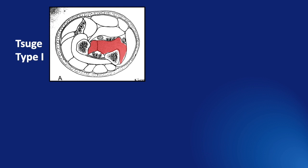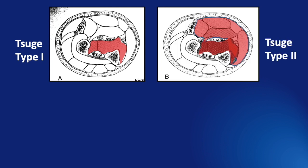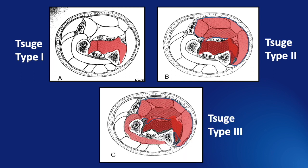In type 1, it is the deep flexors alone that are involved. In type 2, it is the superficial flexors also that can be involved. And in type 3, the extensors are also involved.